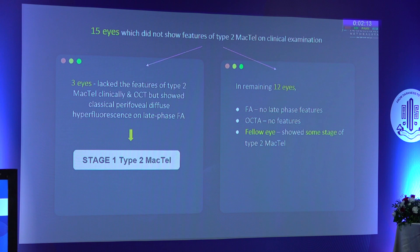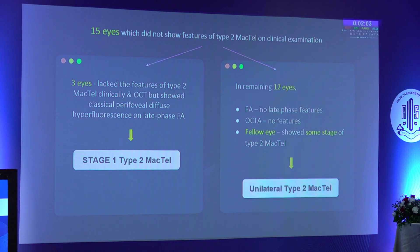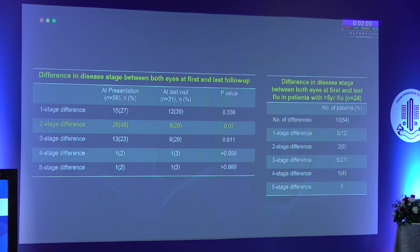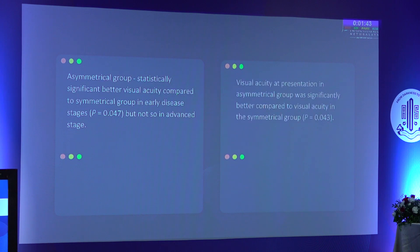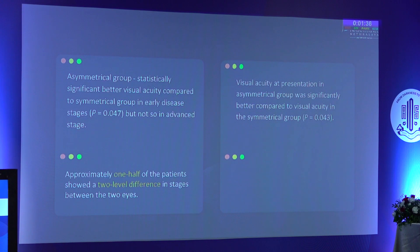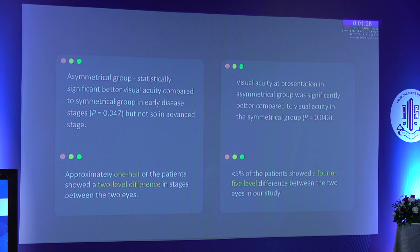The remaining 12 eyes showed no features on OCT angiography, but the fellow eye showed some stage of MacTel — these were described as unilateral type 2 MacTel. A 2-stage difference was seen at presentation in 26 eyes and at last follow-up in about 8 eyes. The asymmetrical group had statistically significantly better visual acuity compared to the symmetrical group, but not so in the advanced stage. Approximately half of the patients showed a 2-level stage difference between the two eyes at presentation and follow-up, and less than 5% showed a 4 or 5 level difference.